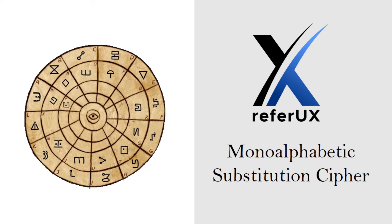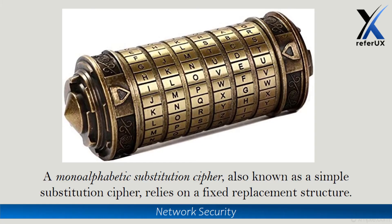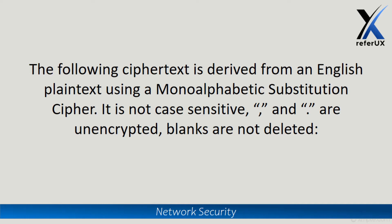Hello guys, welcome to ReferUX. I'm Nimesh. Today we will talk about mono-alphabetic substitution cipher. A mono-alphabetic substitution cipher is also known as a simple substitution cipher, which relies on a fixed replacement structure. That means the substitution is fixed for each letter of the alphabet. Hence, if letter A is encrypted to letter R, then every time we see the letter A in the plain text, we replace it with the letter R in the cipher text.